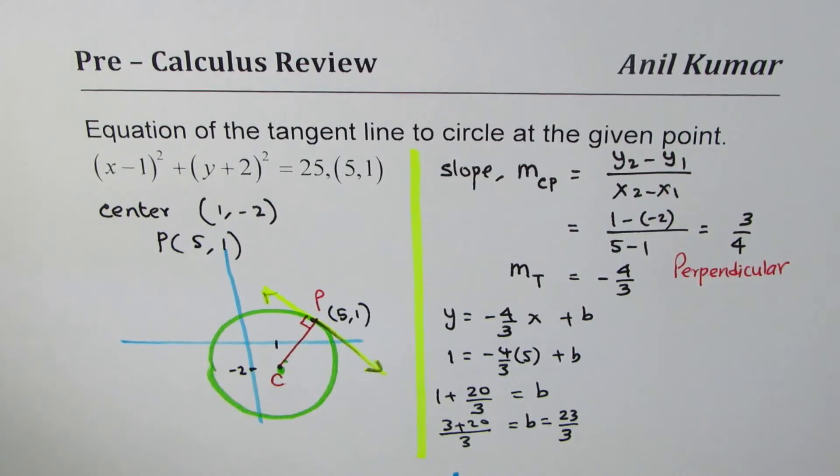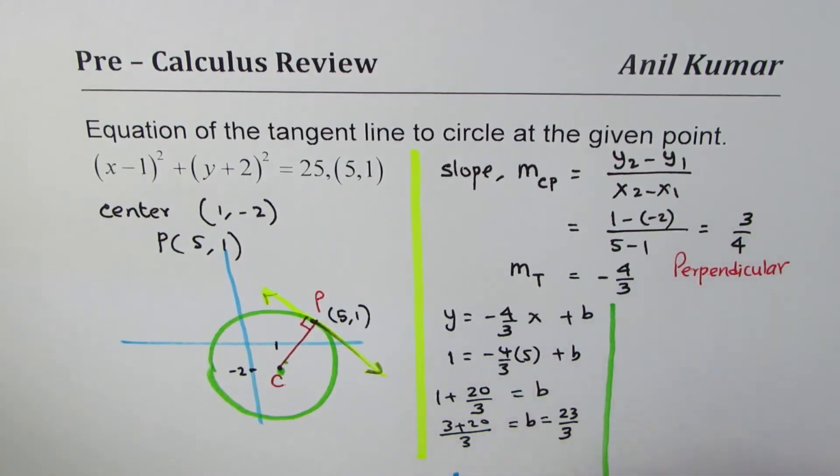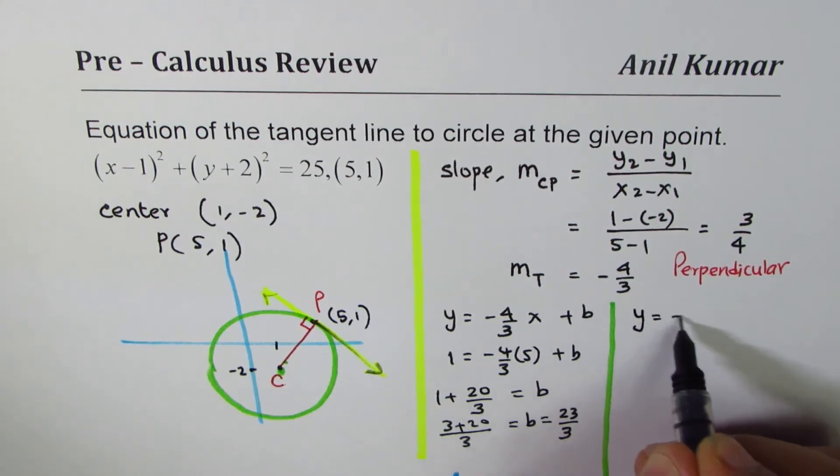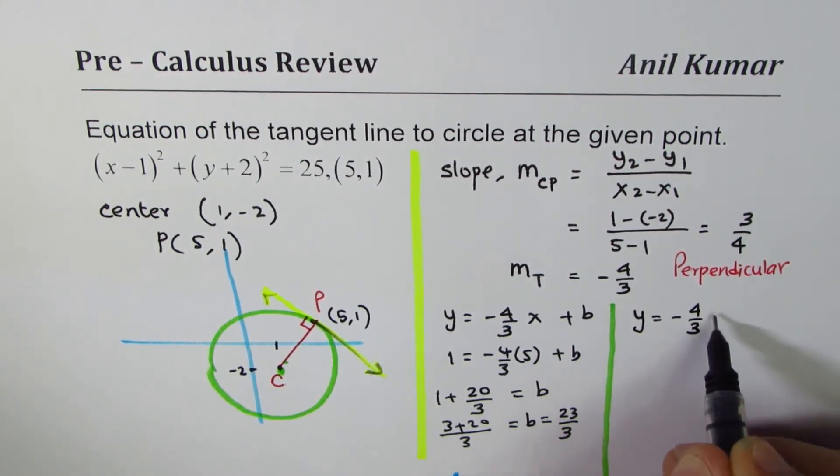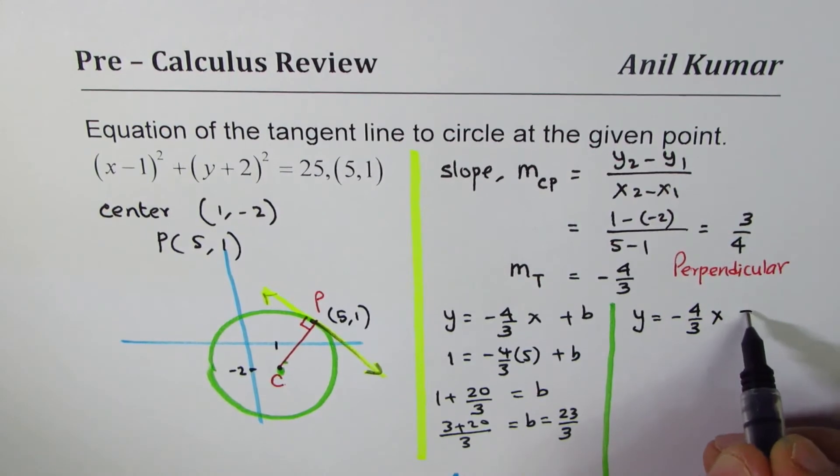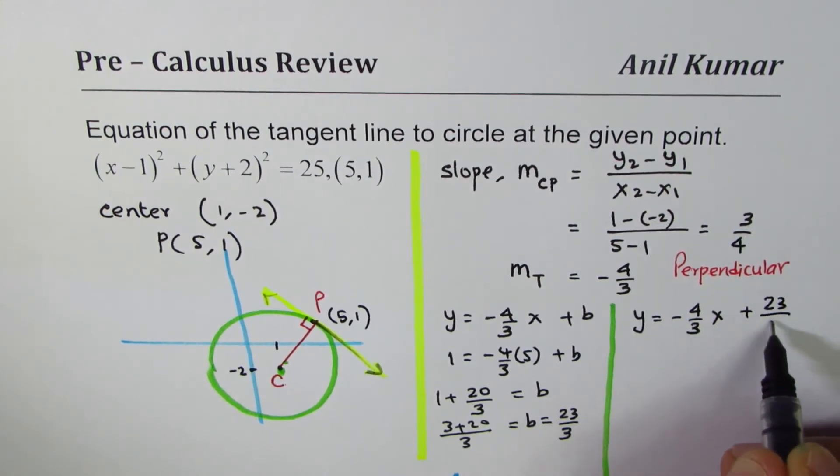So once we know the value of b, we can easily write down the equation of the tangent line. Substituting this here, we get y equals minus 4 over 3x plus 23 over 3.